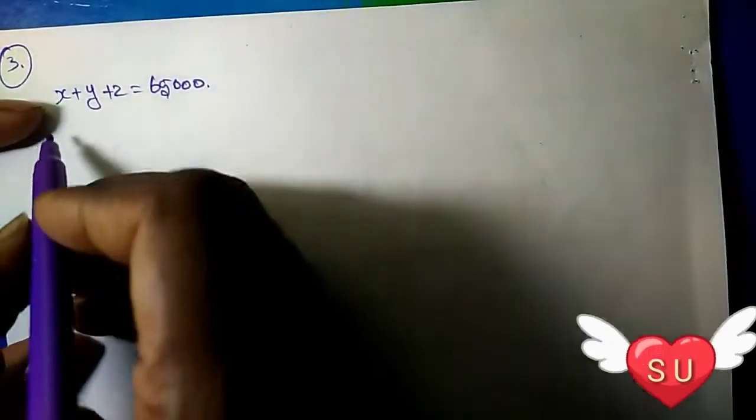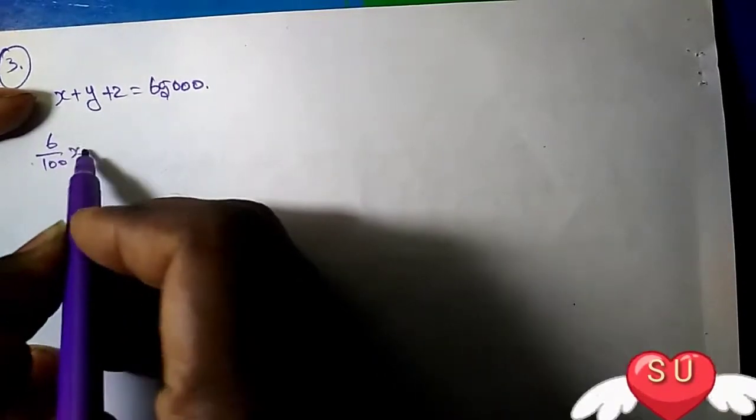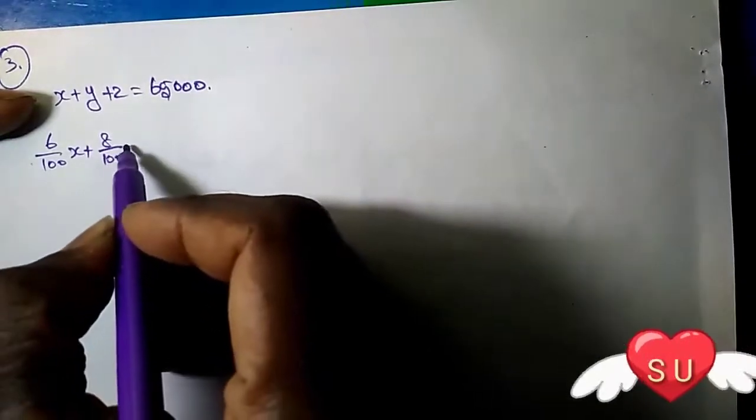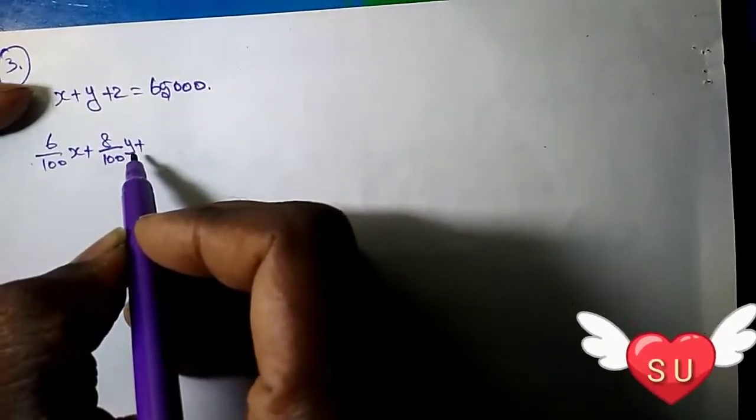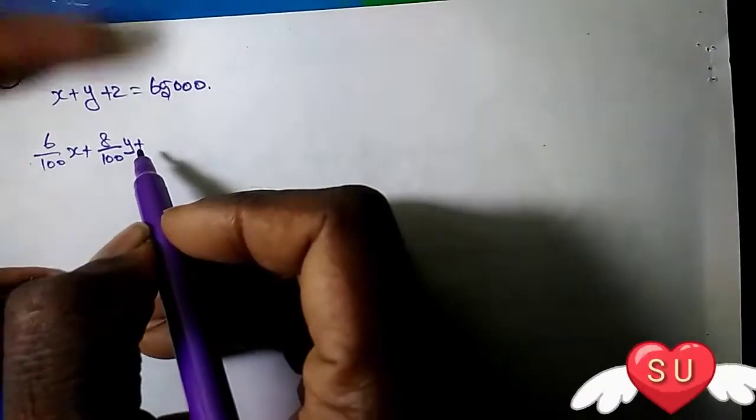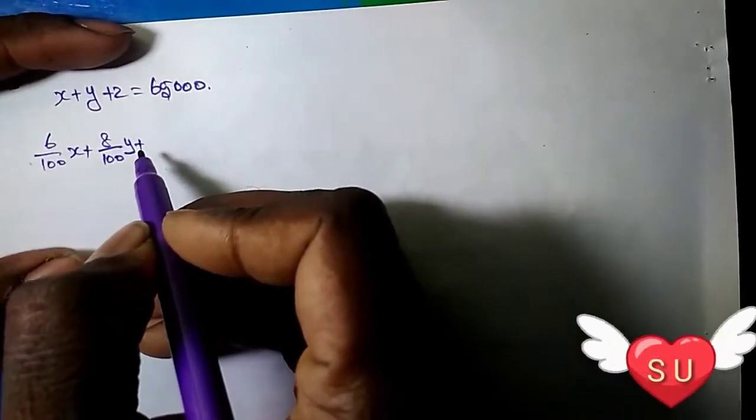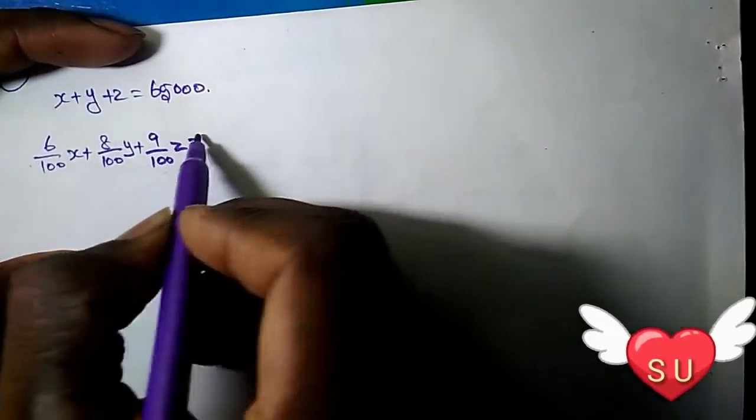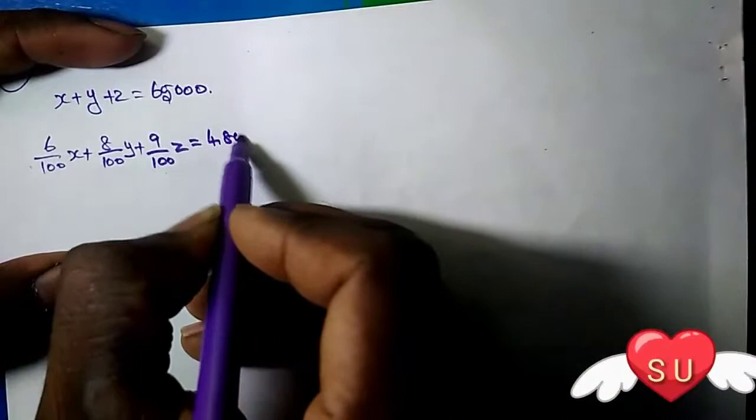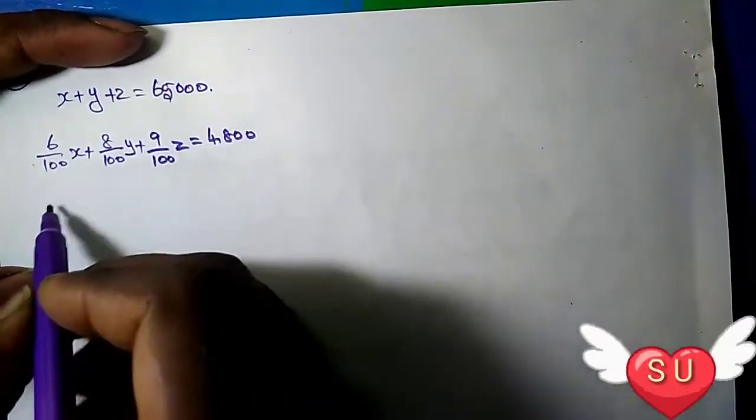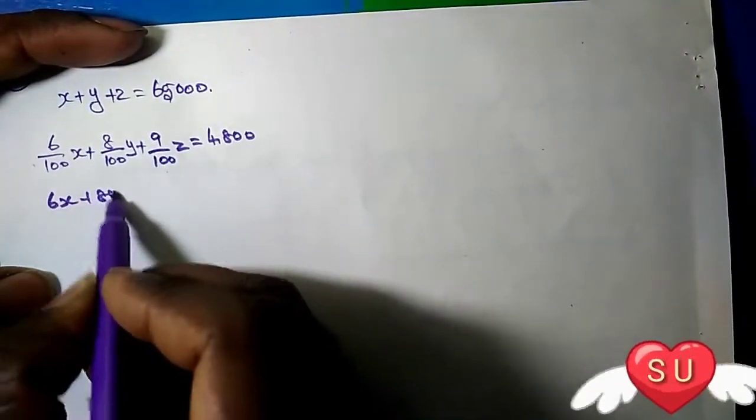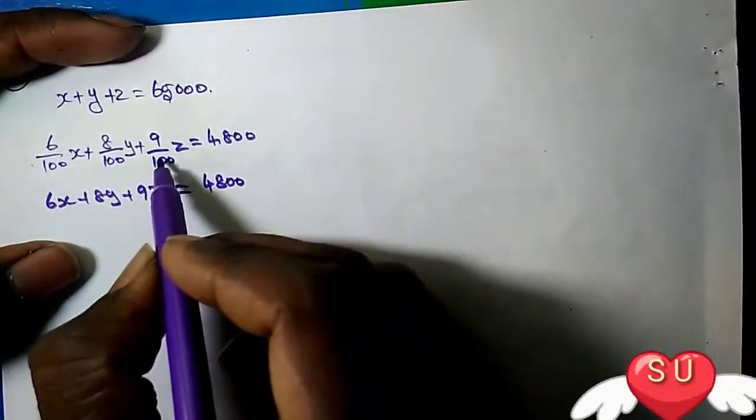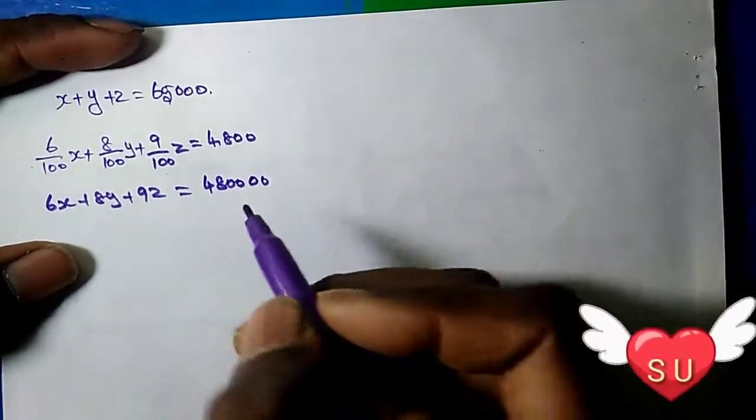Next, 6 divided by 100 times X, plus 8 divided by 100 times Y, plus 9 divided by 100 times Z equals 4800. Multiplying by 100, we get 6X plus 8Y plus 9Z equals 480,000.